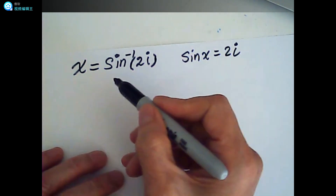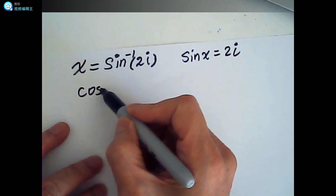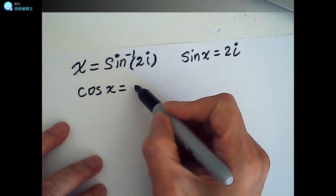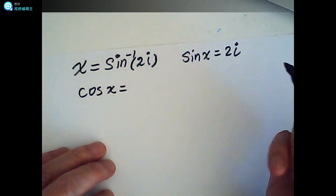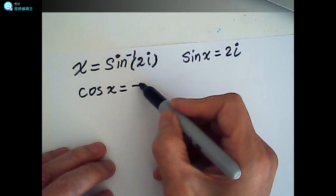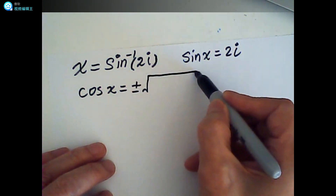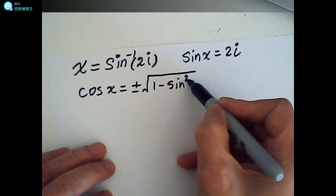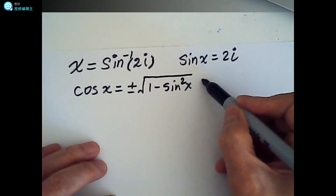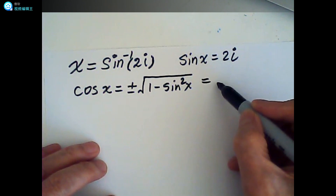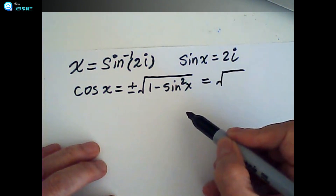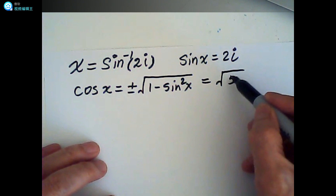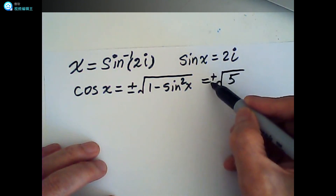From which we can find cosine. Cosine x is equal to positive or negative square root of 1 minus sine squared x. So cosine x equals plus or minus square root of 1 minus (2i)², which is 1 minus (-4), giving us plus or minus square root of 5.